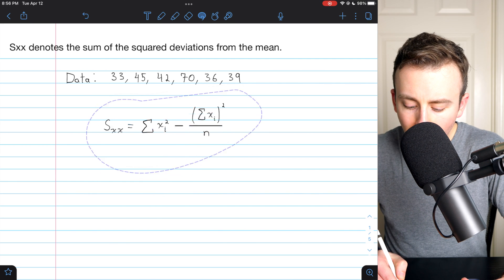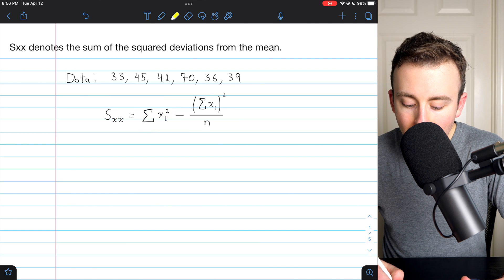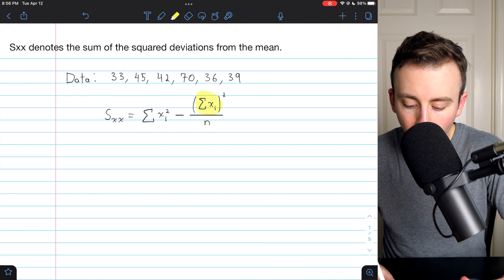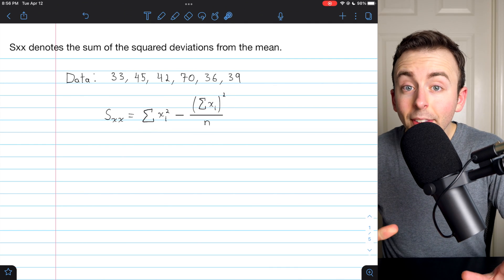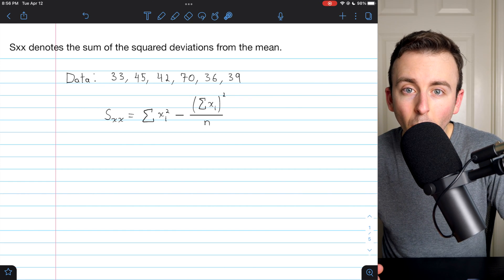In this shortcut formula, there are two important components: the sum of the squares of our data values and the sum of the data values, which is getting squared. The calculator is going to give us both of these pieces of information, then we can use the formula.